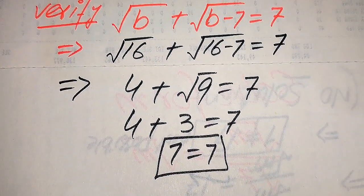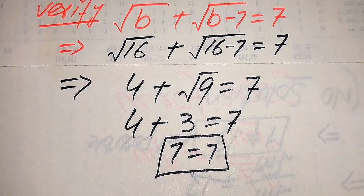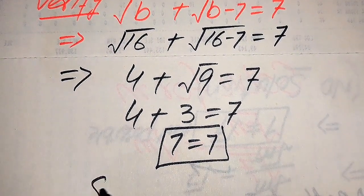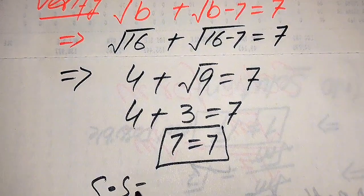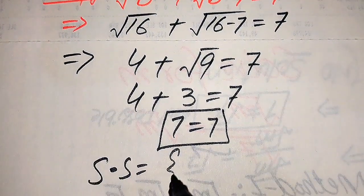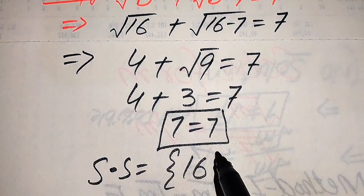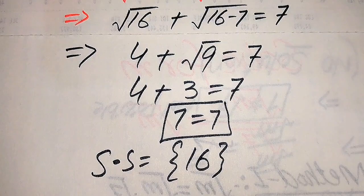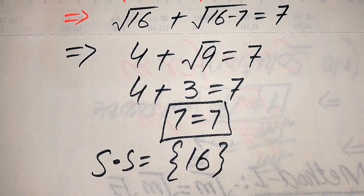This shows that b = 16 satisfies our given equation. So finally the solution set is b = 16. This is our final answer. Thank you so much for watching this video — please subscribe to my channel for more exciting videos.